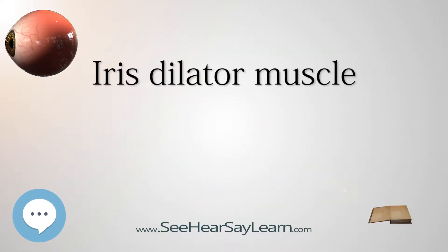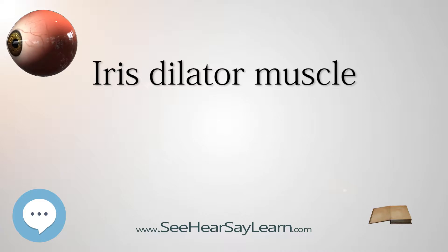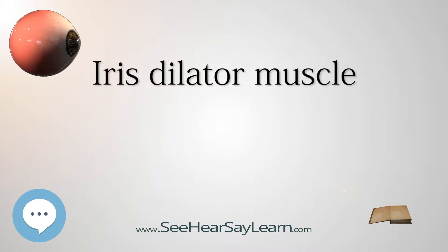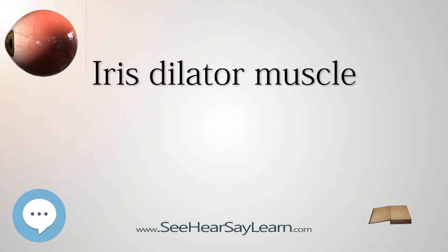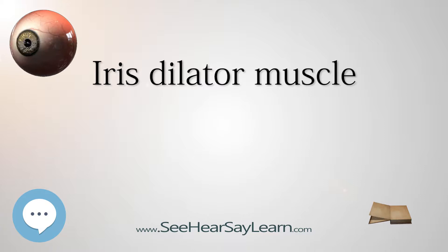The iris dilator muscle, also called the pupil dilator muscle, pupillary dilator, radial muscle of iris, or radiating fibers, is a smooth muscle of the eye running radially in the iris and therefore fit as a dilator. The pupillary dilator consists of a spoke-like arrangement of modified contractile cells called myoepithelial cells. These cells are stimulated by the sympathetic nervous system. When stimulated, the cells contract, widening the pupil and allowing for more light to pass through the eye.